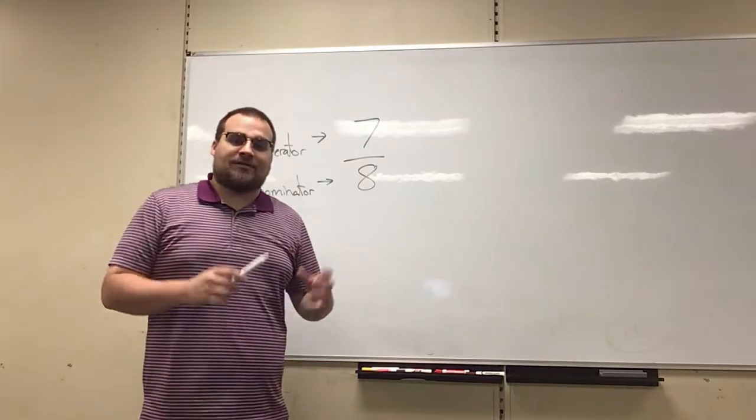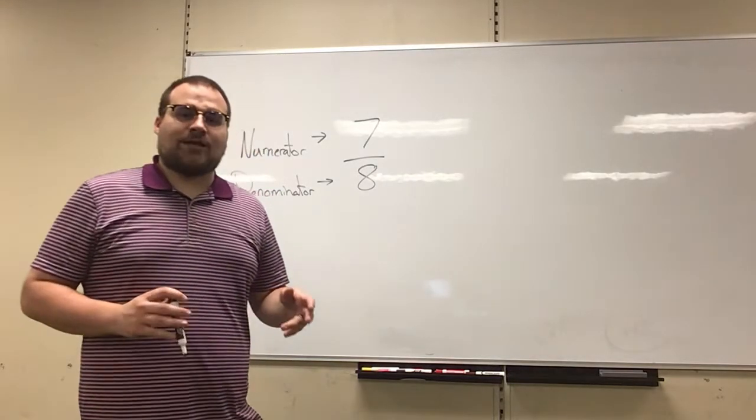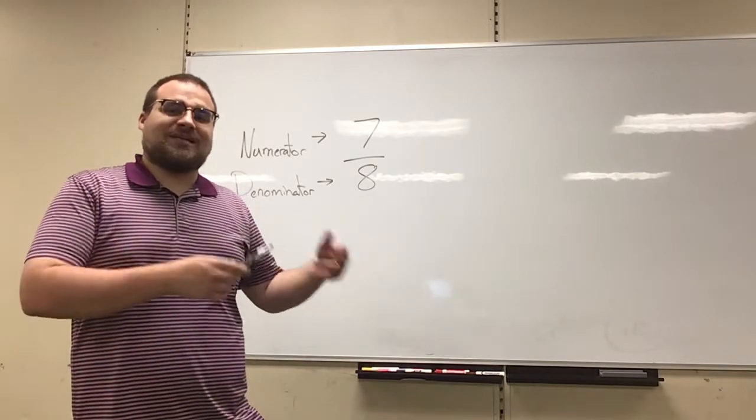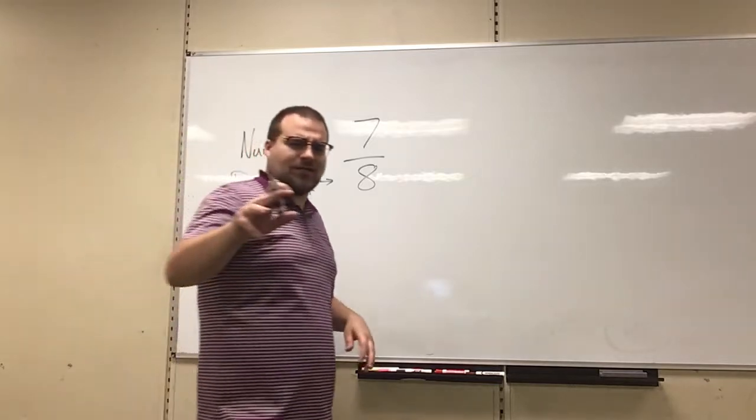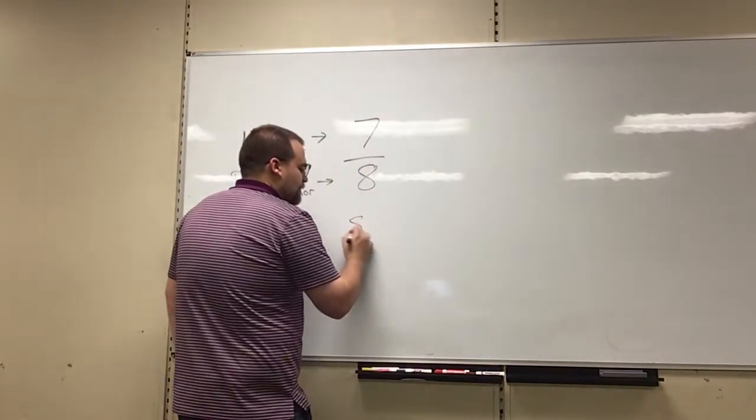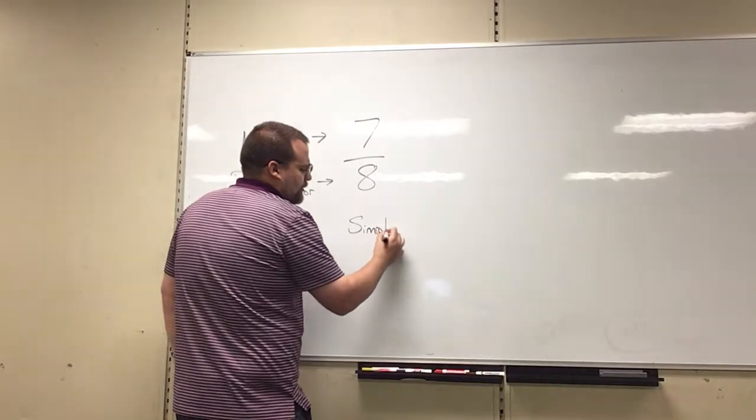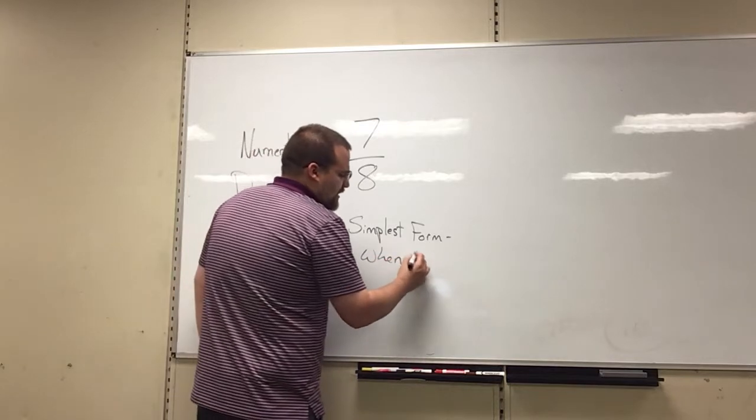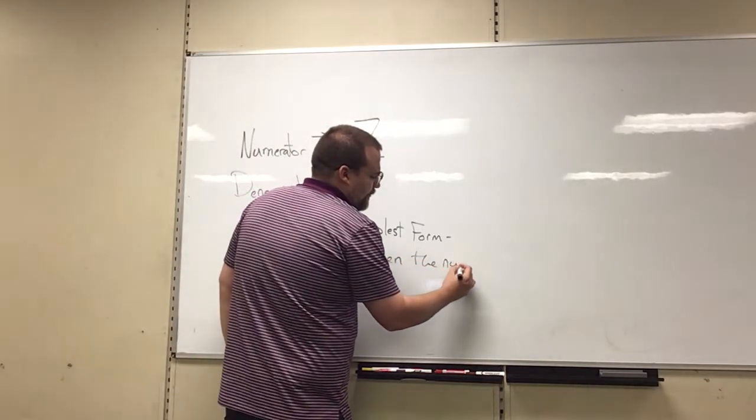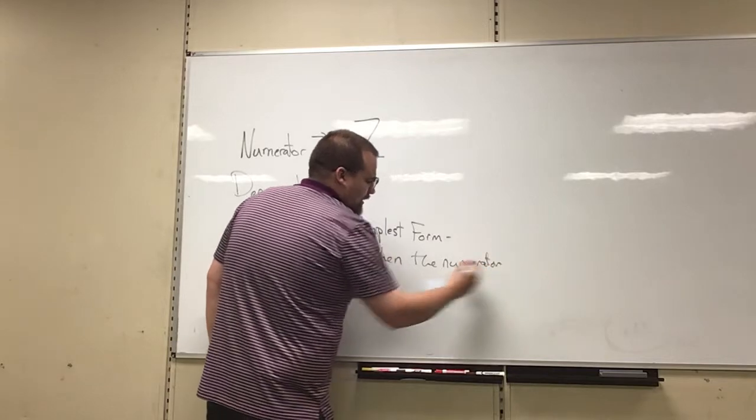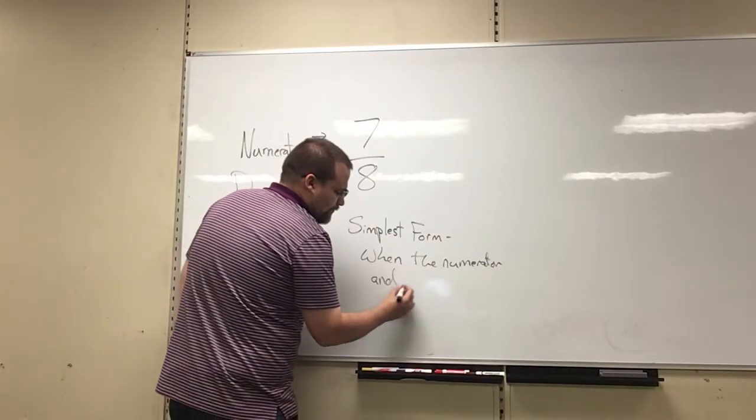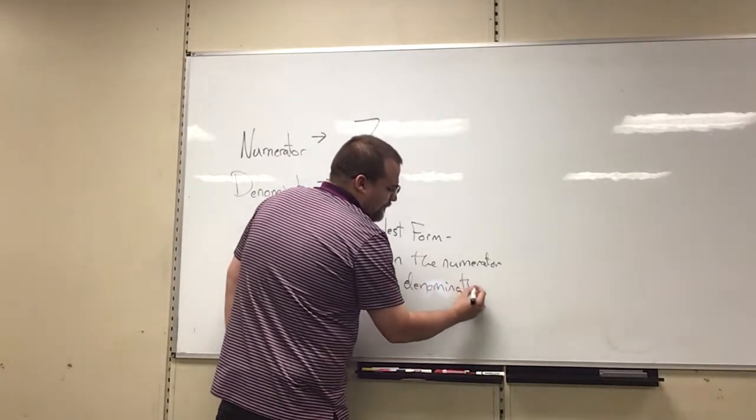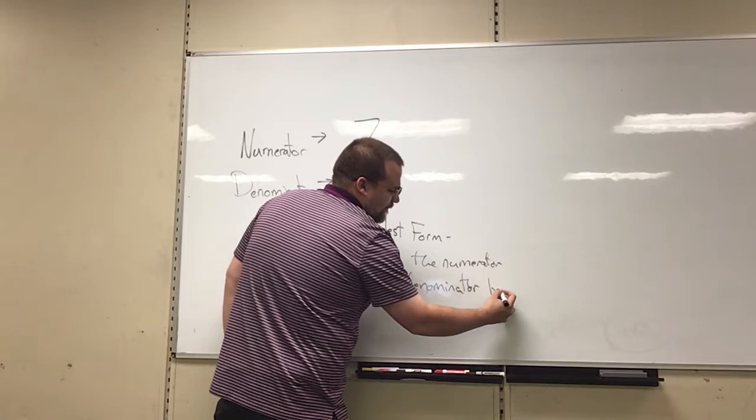So I'm going to write a fraction not in simplest form, and then we're going to talk about how to get it turned into simplest form. Although first I should probably write that definition. Simplest form in fractions is considered when the numerator and denominator have no common factors.